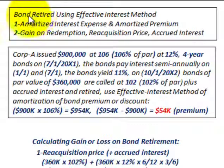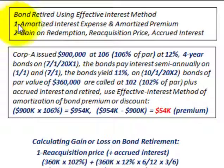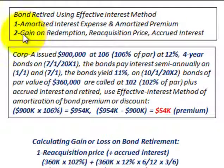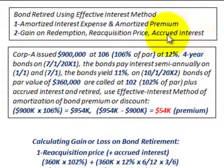What we're going to be looking at here is retiring a portion of the bonds that we have outstanding using the effective interest method. First, we're going to look at how we'd amortize any interest expense and any amortized premium or discount on the portion of bonds that we're retiring. And then secondly, we're going to look at any gain on redemption, the reacquisition price, and also any accrued interest on these bonds.